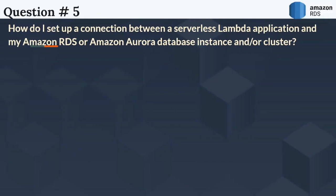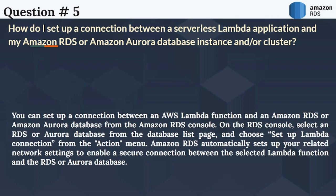The next question is: How do I set up a connection between a serverless Lambda application and my Amazon RDS or Amazon Aurora database instance or cluster? You can set up a connection between an AWS Lambda function and an Amazon RDS or Amazon Aurora database from the Amazon RDS console. Select an RDS or Aurora database from the database list page and choose Set up Lambda connection from the action menu. Amazon RDS automatically sets up your related network settings to enable a secure connection between the selected Lambda function and the RDS or Aurora database.